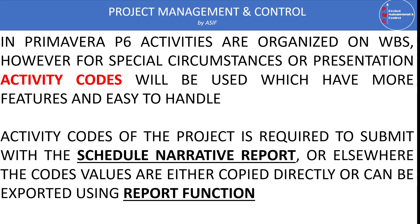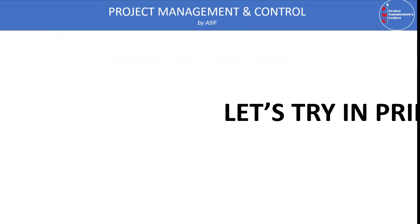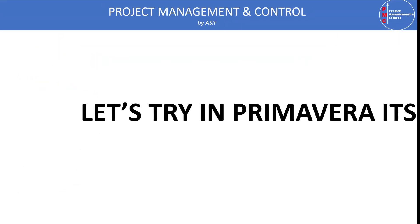To copy activity codes from Primavera P6 to Excel, one way is to copy all codes one by one from Primavera into Excel. Alternatively, we can use the Report function to copy all activity codes at one time from Primavera P6 to Microsoft Excel. Let's start in Primavera P6 directly.